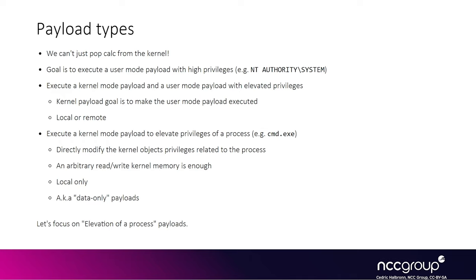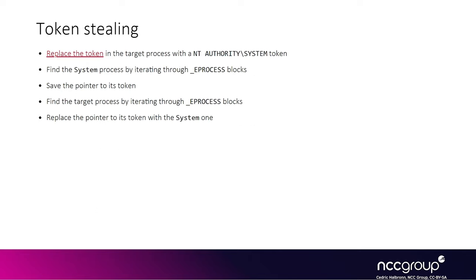We're going to detail three methods to achieve that goal, which consist of manipulating certain structures in the kernel. The first method, once you have a kernel read-write primitive, is to find a pointer to a privileged token in kernel memory — like the SYSTEM token — and patch your target process structures so it uses that system token pointer instead of the original unprivileged one. Typically, a high privileged process like lsass.exe or the SYSTEM process has a reference in its EPROCESS structure to the token you want.